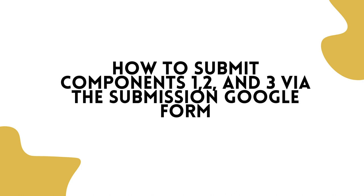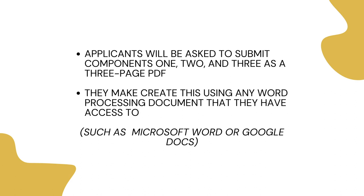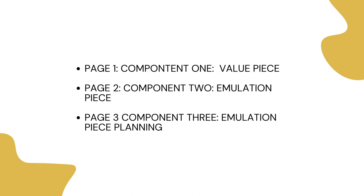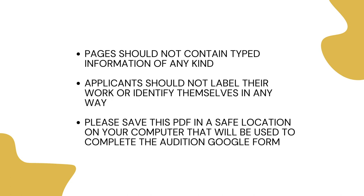How to submit Components 1, 2, and 3 via the Submission Google Form: Applicants will be asked to submit components 1, 2, and 3 as a three-page PDF, which they may create using any word processing document such as Microsoft Word or Google Docs. After the three pages have been populated correctly, applicants should save and export their project as a PDF. Page 1 should be Component 1 (the Value Piece), Page 2 should be Component 2 (the Emulation Piece), and Page 3 should be Component 3 (the Emulation Piece Planning). Pages should not contain typed information of any kind, and applicants should not label their work or identify themselves in any way.